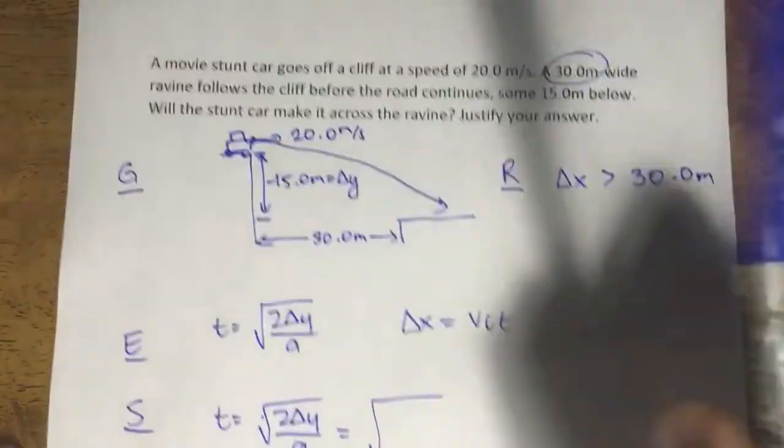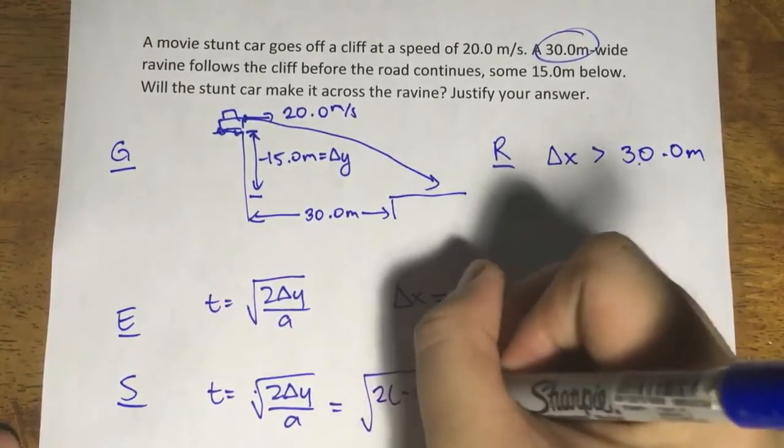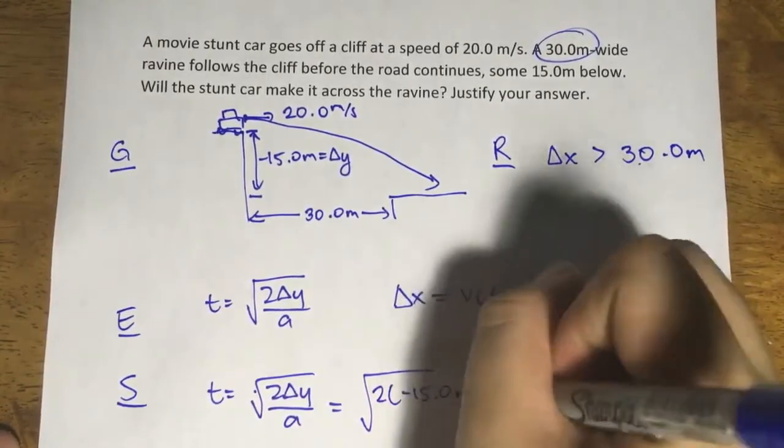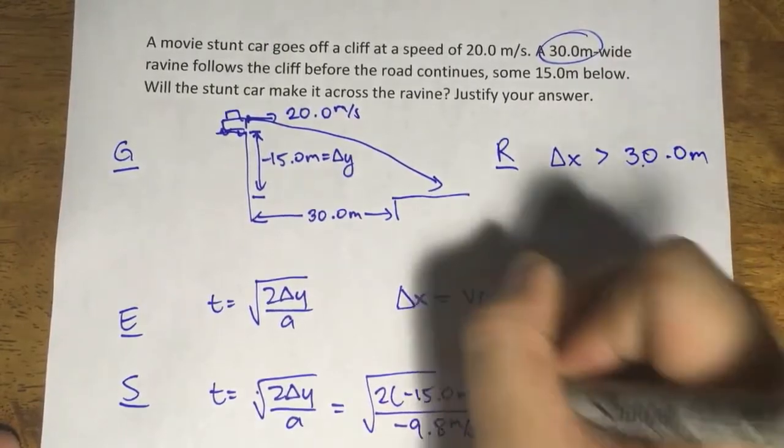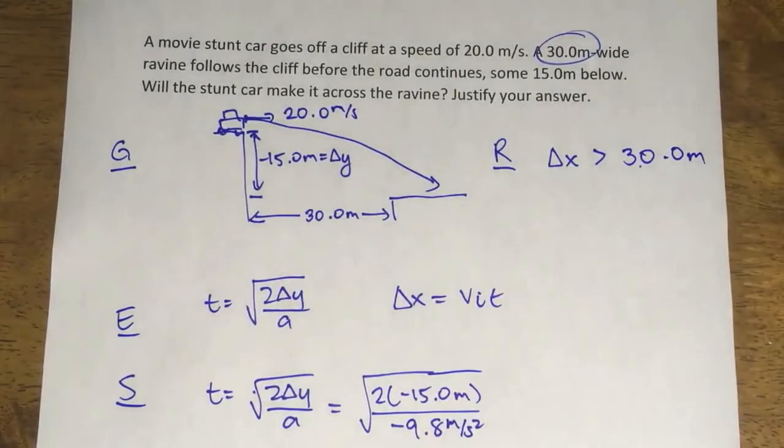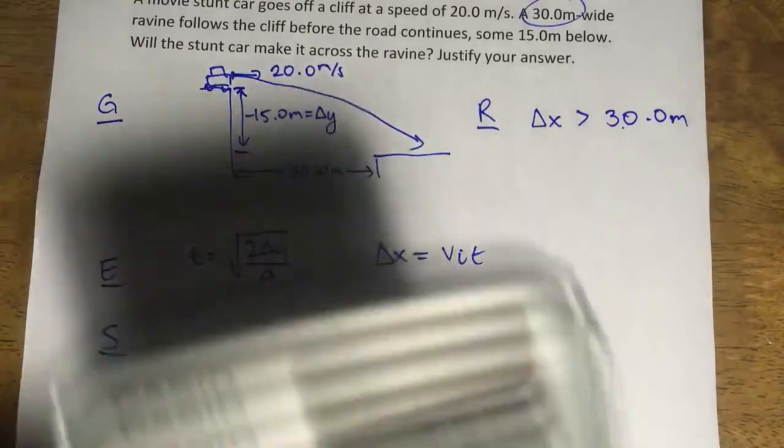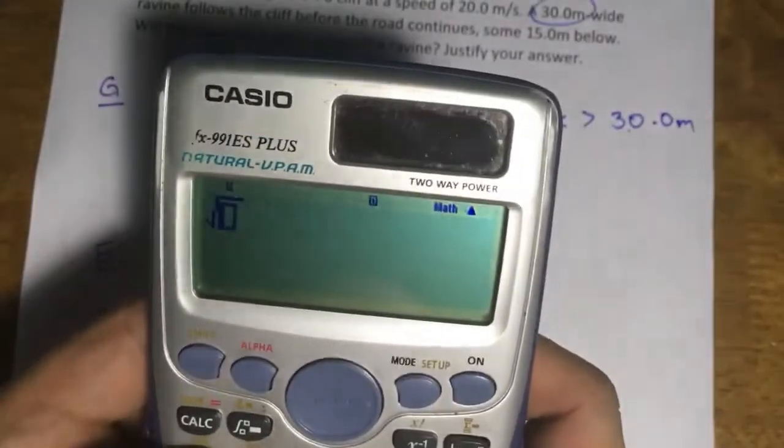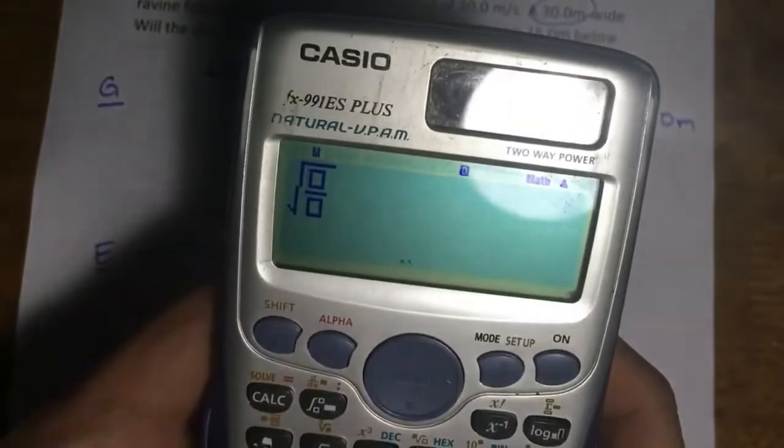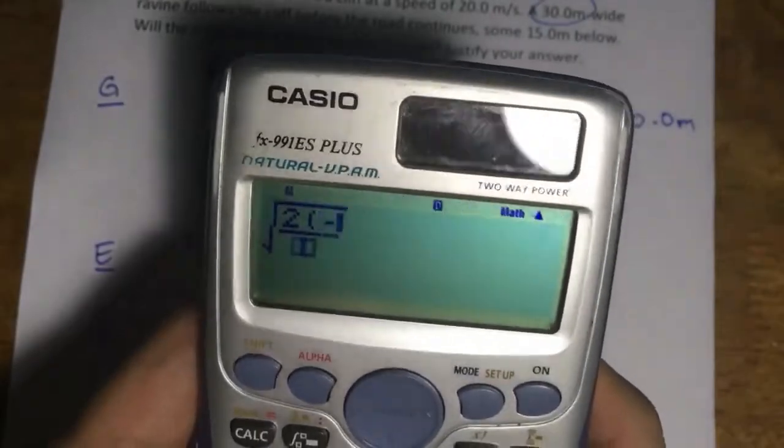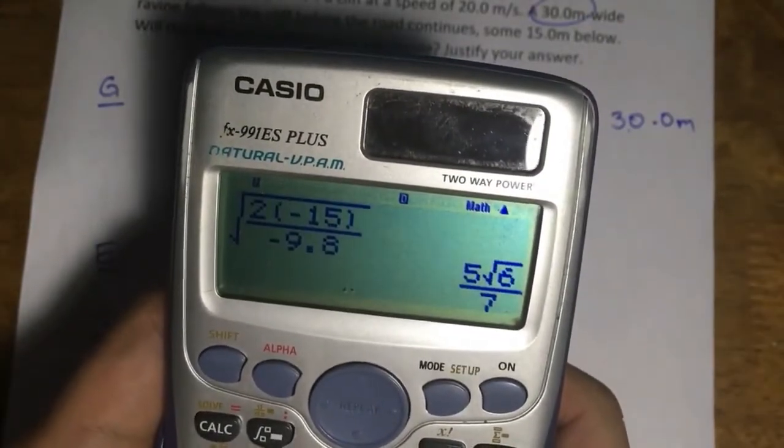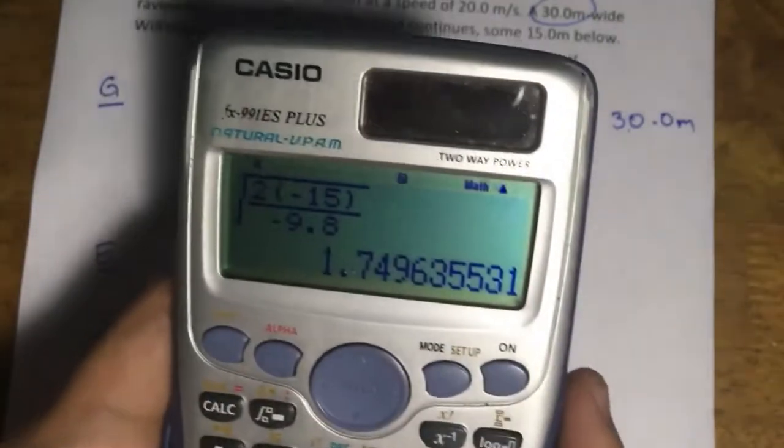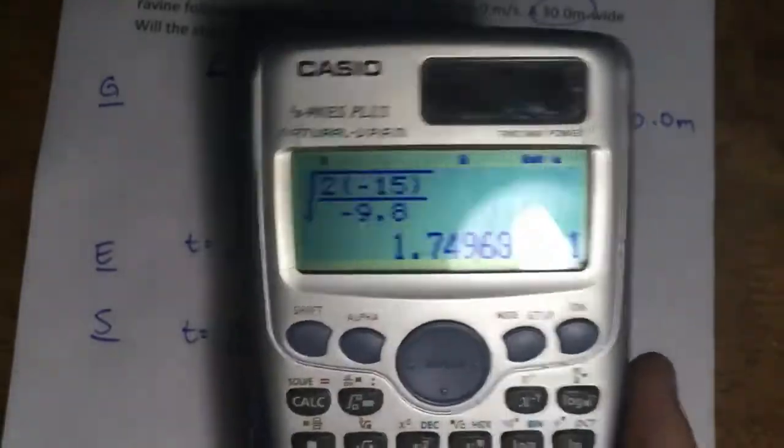Delta y is negative 15 meters, and negative 9.8 meters per second squared at the bottom. So when we plug that into our calculator...